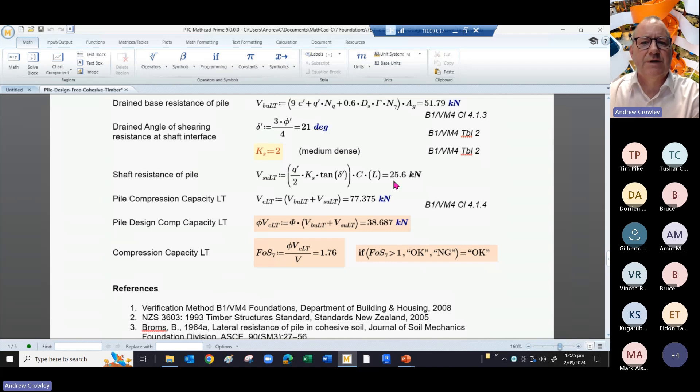The pile compression capacity long term therefore is 77, and the design compression capacity in the long term is 38. So we still have a factor of safety of over 1, down to 1.76.